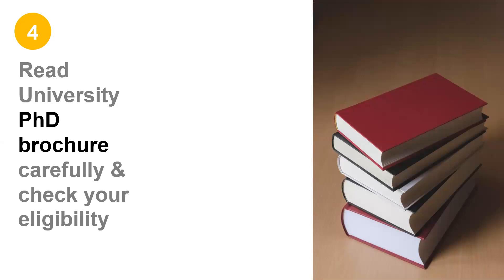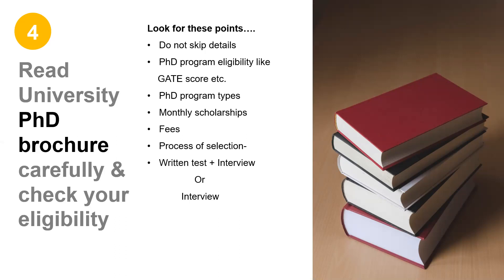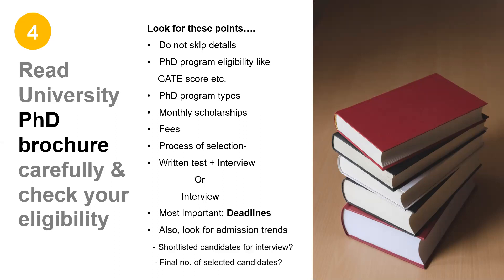Point number four. Please read PhD brochures carefully and check your eligibility. No matter if the latest one has not yet been uploaded, check the previous semester's one. Do not skip any detail. Read about PhD program eligibility, like whether you need a GATE score or not and what is the cutoff. Note the different types of PhD programs offered, monthly scholarship and fees, and the process of selection — whether there will be a written test plus interview or only interview. Most importantly, note the deadlines. Also put your investigation cap on and see the admission trends — how many candidates were shortlisted for interview last year and how many were finally offered the seat. Through this you will get an idea on the increasing competition for PhD admissions in that university.